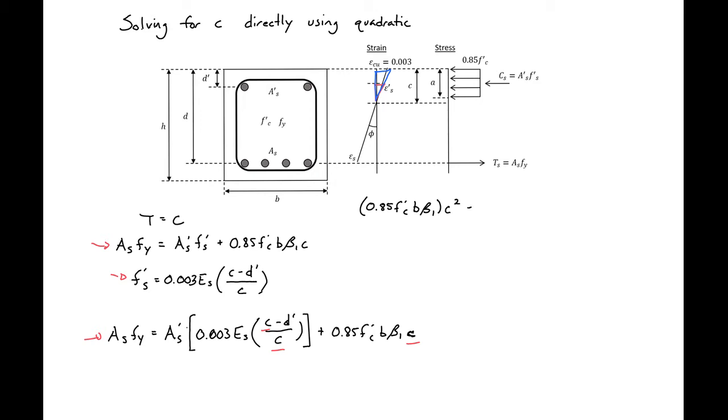And then we'll have plus 0.003 As prime times Es minus As Fy, all this times C.